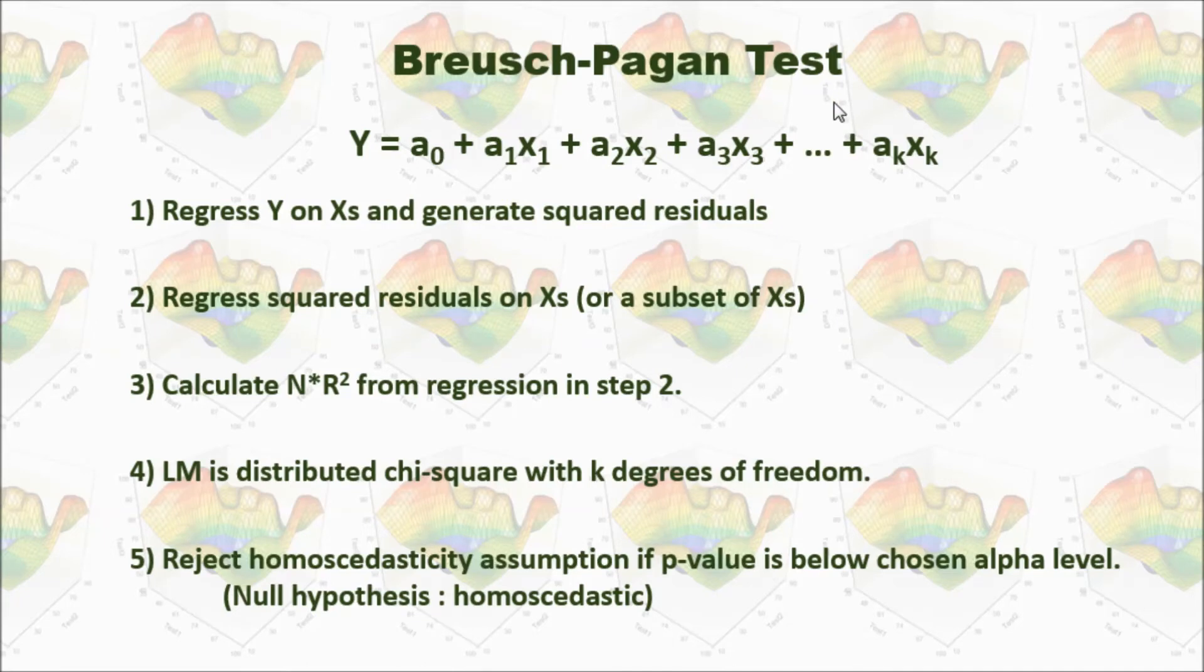LM is distributed chi-squared with k degrees of freedom. k is number of the independent variables. In this Breusch-Pagan test, the null hypothesis is it is homoscedastic. So we will reject homoscedasticity assumption if p-value is below chosen alpha level.